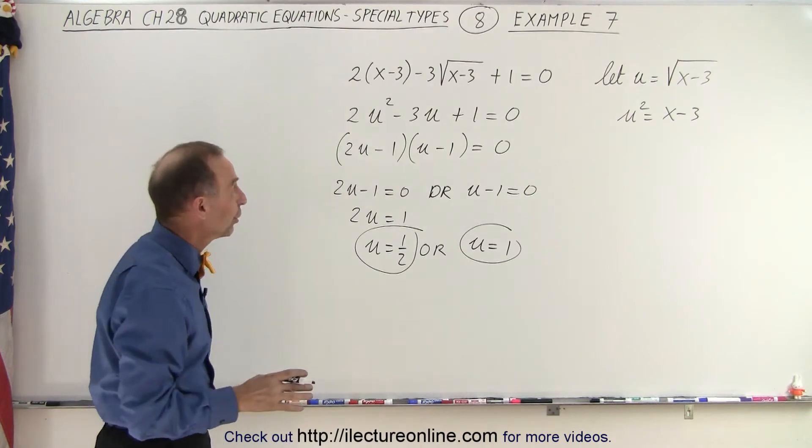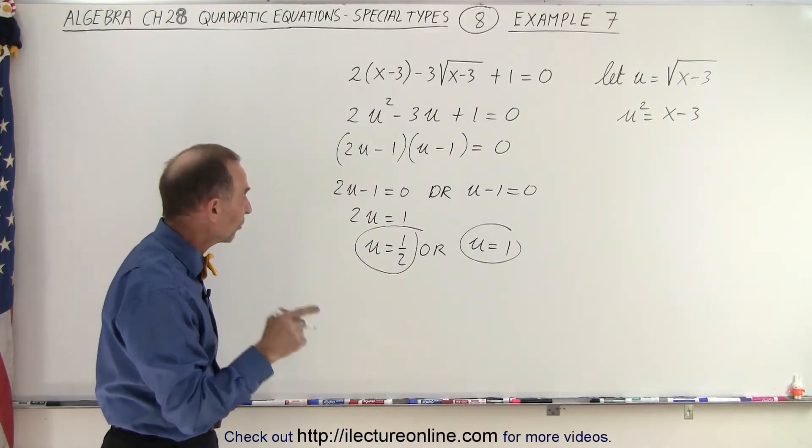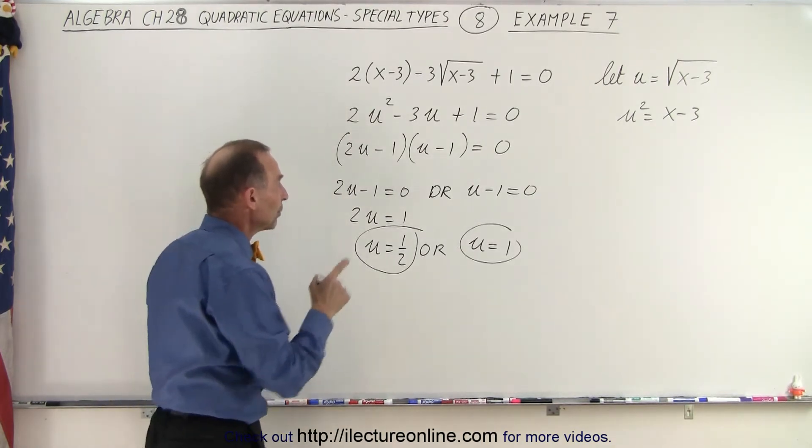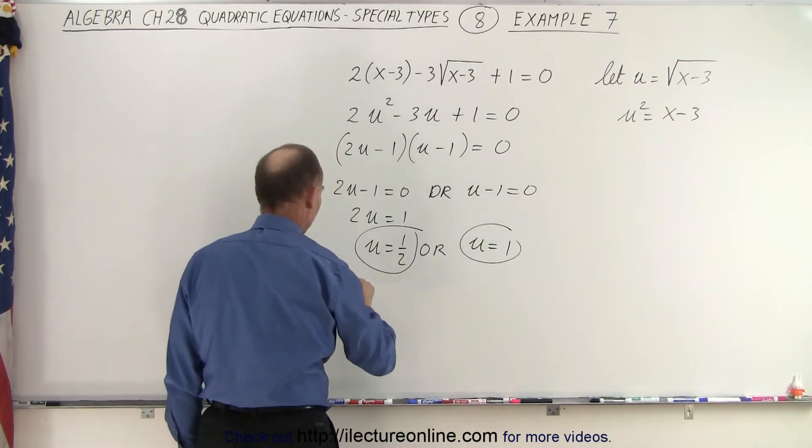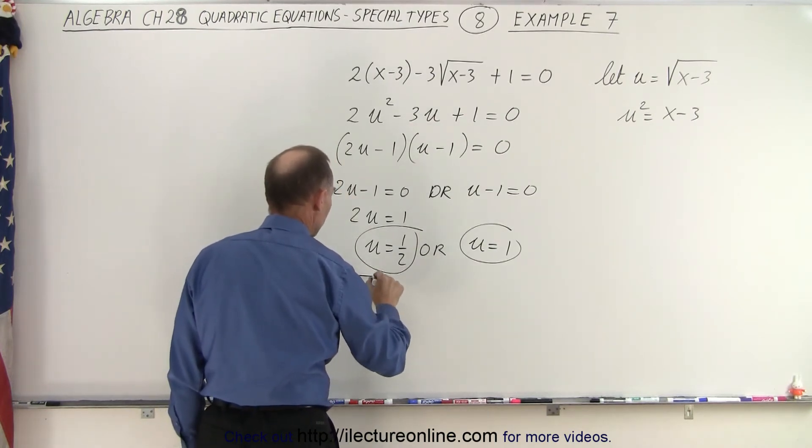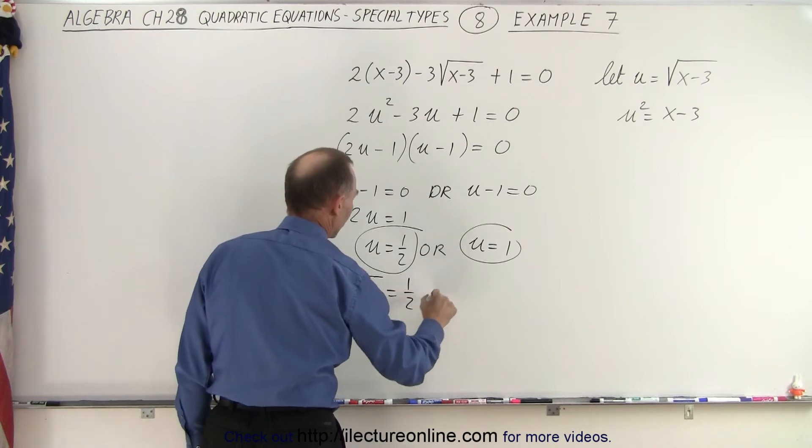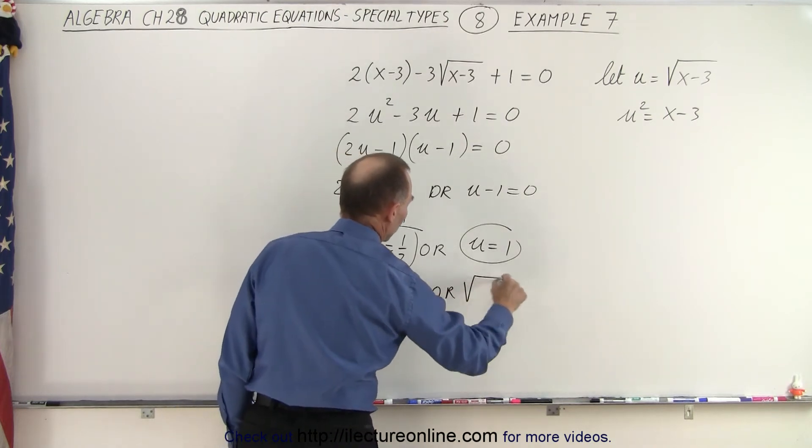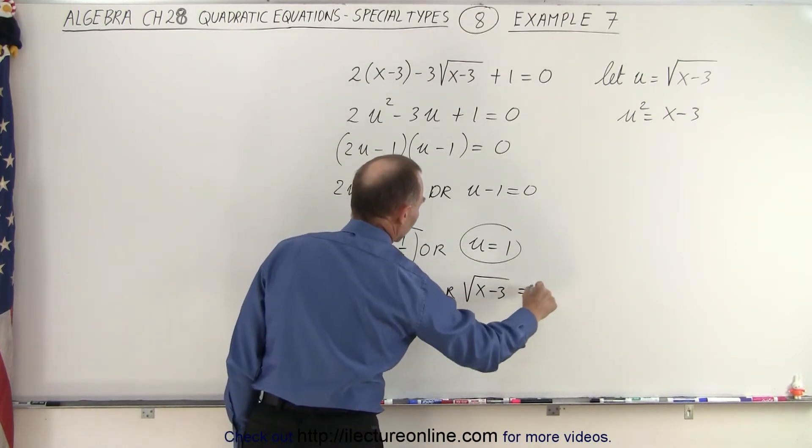Of course, we're not looking for u, we're looking for x. So now we substitute back in. Instead of u, we write the square root of x minus 3. So the square root of x minus 3 is equal to 1-half, or the square root of x minus 3 is equal to 1.